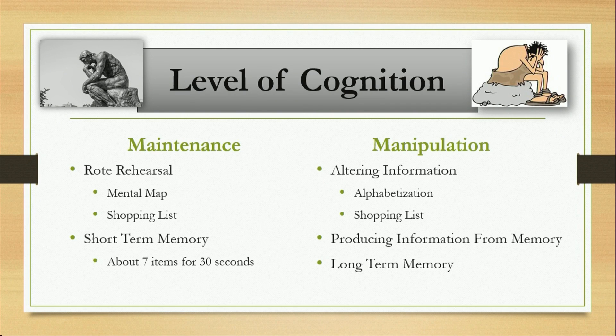With different modalities and limited resources to allocate towards those modalities, different levels of cognition have different effects on your performance. A maintenance level task is a simple task that requires short-term memory and generally maintaining information — just repeating it so that you don't forget it. Manipulation requires basically permission from your central executive to use your memory to alter that information in order to be successful, like alphabetization. It's a lot easier to remember a shopping list than to remember the items that go into a recipe and try to manipulate all that information while driving — it would obviously have more detriment to your performance.